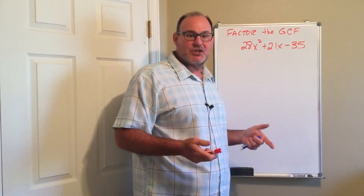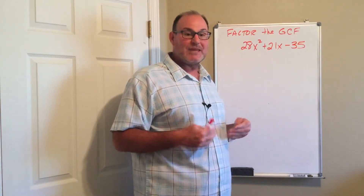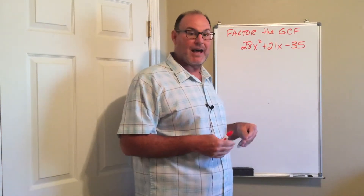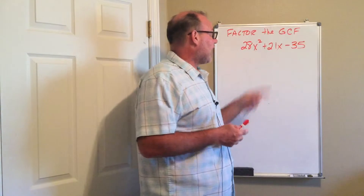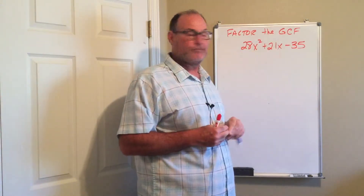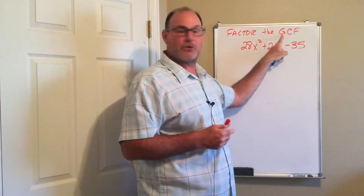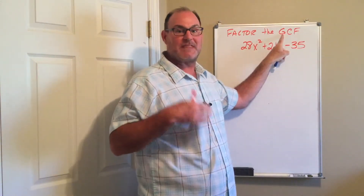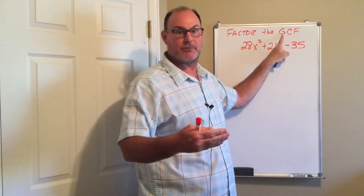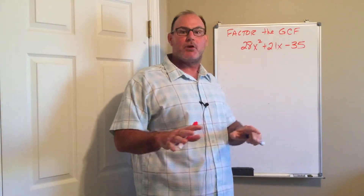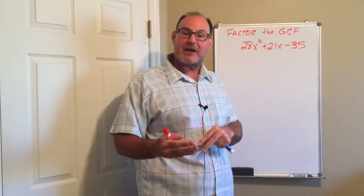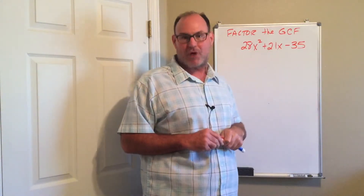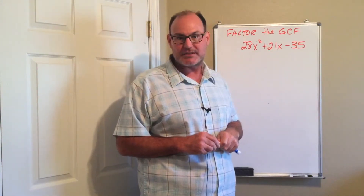In this section we are beginning to talk about factoring by factoring out the greatest common factor. The G is for greatest — we always want to take out the biggest possible factor. Remember, the whole point of factoring is taking an expression and writing it as the product of two things.